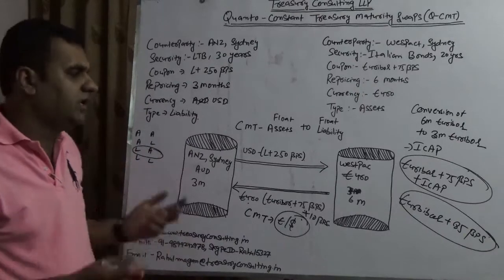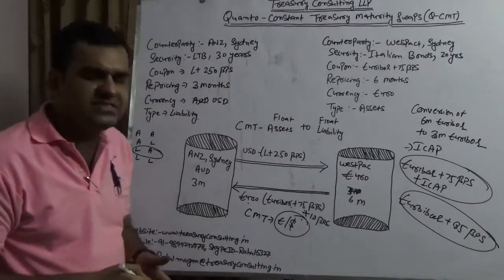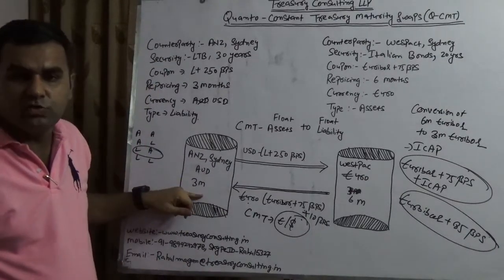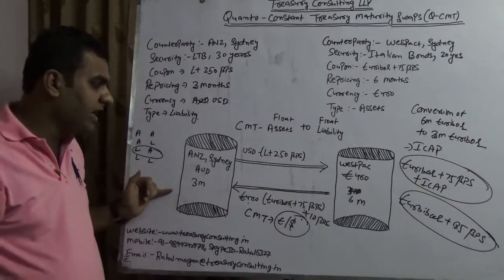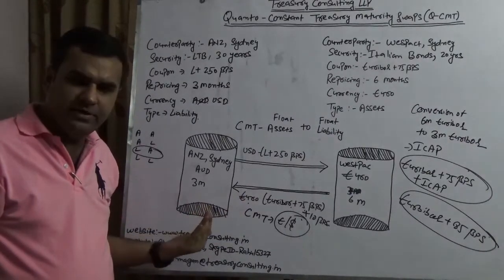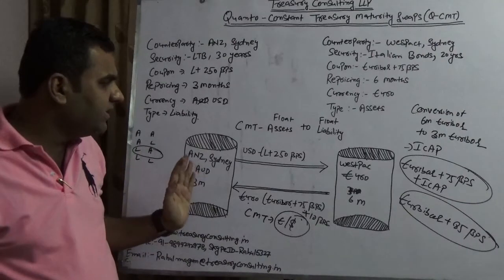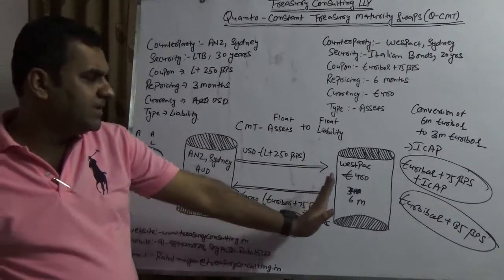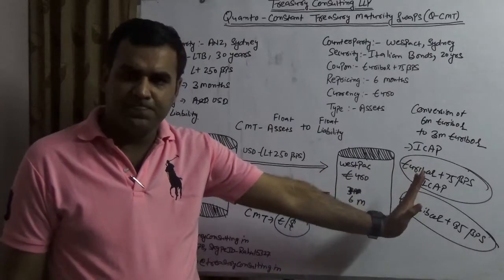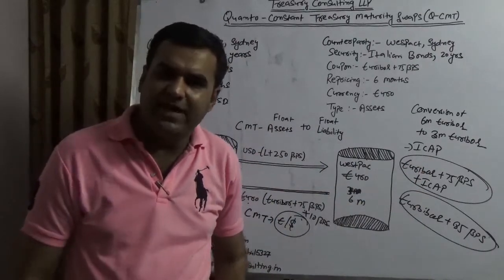Of course, to mitigate the cross currency risk, there are two options. Option number one is ANZ Sydney should have a liability in Euro. Because you are getting income in Euro, you should have a liability in Euro. On the other hand, Westpac who is getting a dollar income, they should have dollar flows also, so that they can offset each other.